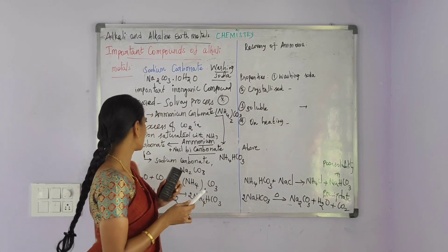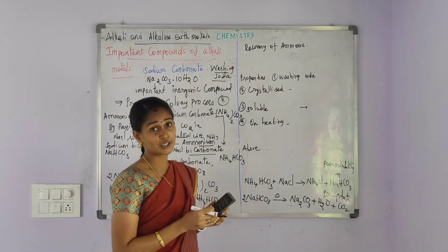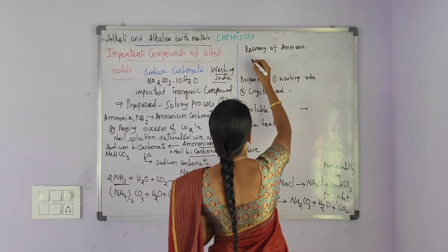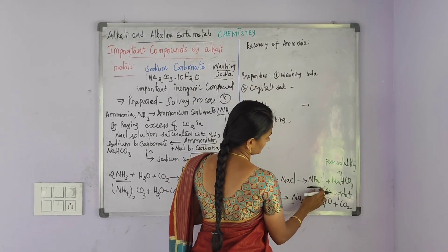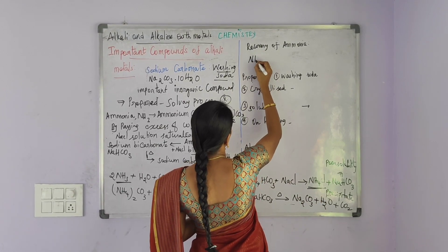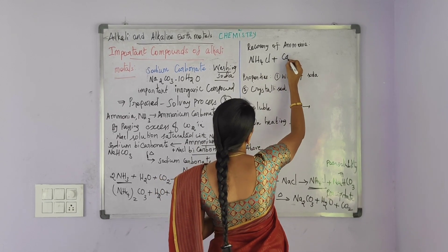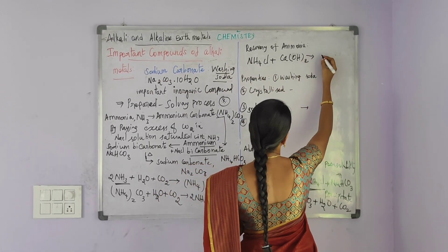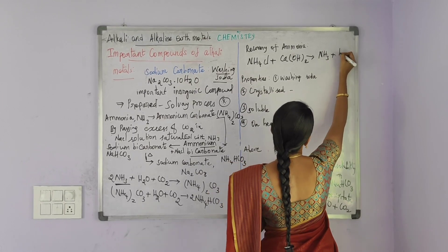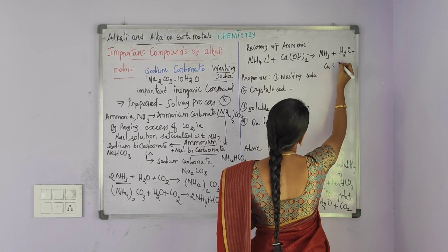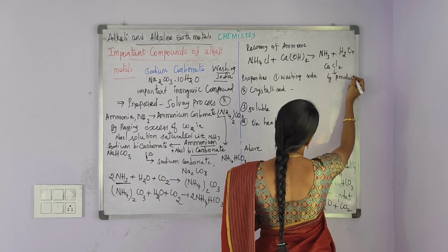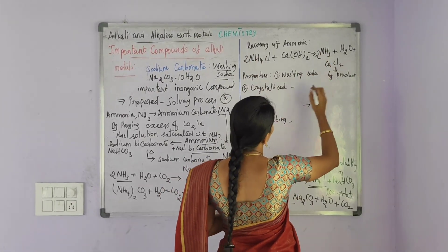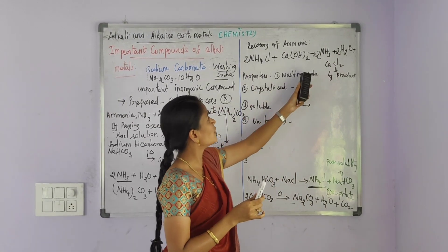At the beginning of the Solvay process, we consumed ammonia, but we are able to regenerate it — that is the recovery of ammonia. In the products, ammonium chloride (NH4Cl) is treated with calcium hydroxide. It forms ammonia and water (H2O) plus calcium chloride (CaCl2). Calcium chloride is one of the by-products. Balancing the equation with a coefficient of 2 throughout. Now ammonia is regenerated.